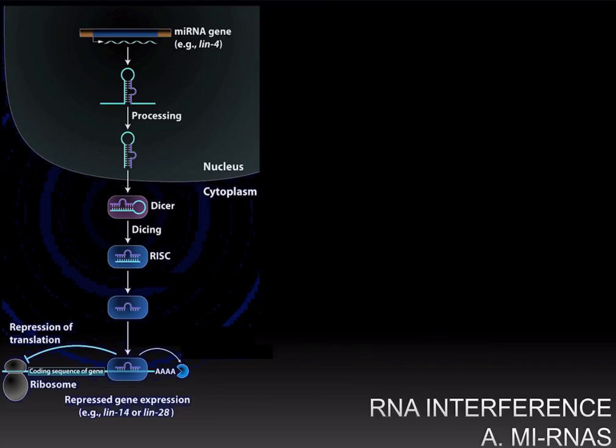These mechanisms are also used to regulate the expression of endogenous, or normal, genes of the organism. We will start with microRNAs, which are a set of functional RNAs that use RNA interference mechanisms to control how much particular genes are expressed in the cell.